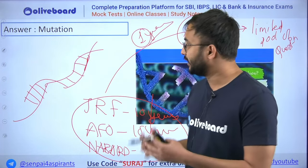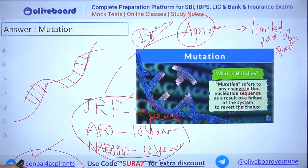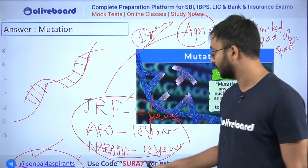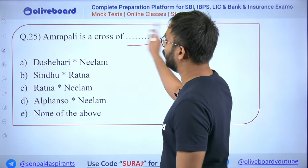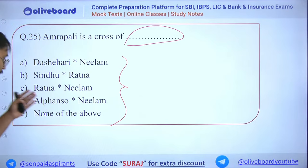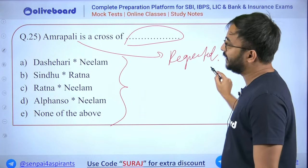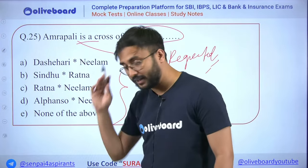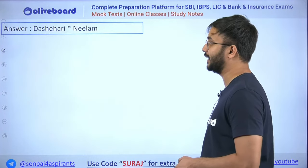These questions are free on the internet. The instructor has posted NABARD previous 10-year and AFO questions on the channel — PPTs will be uploaded. Next: Amrapali is a cross of which mango varieties? Options involve Dasheri, Neelam, Sindhu, Ratna, Alfonso. The answer is Dasheri × Neelam. This is the most repeated question in all agri exams — state ROs, AOs all love this question.